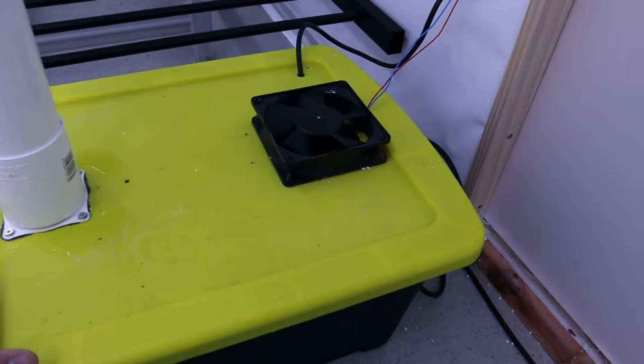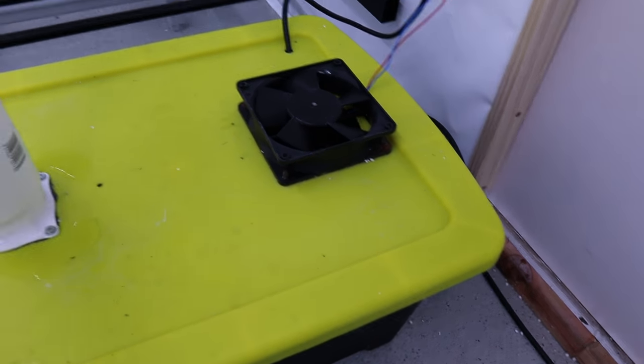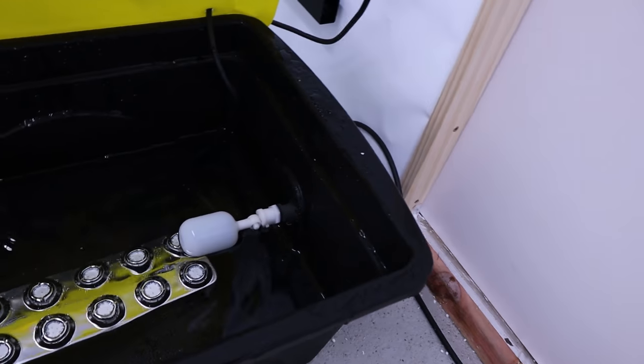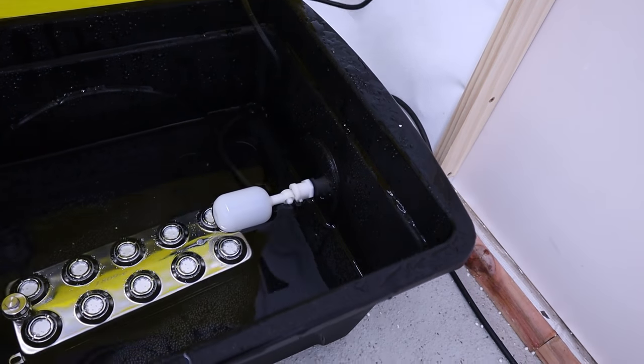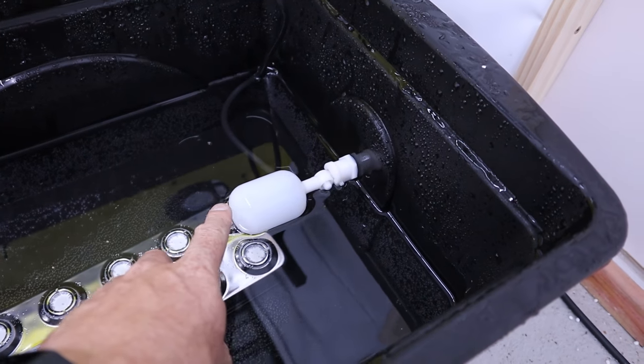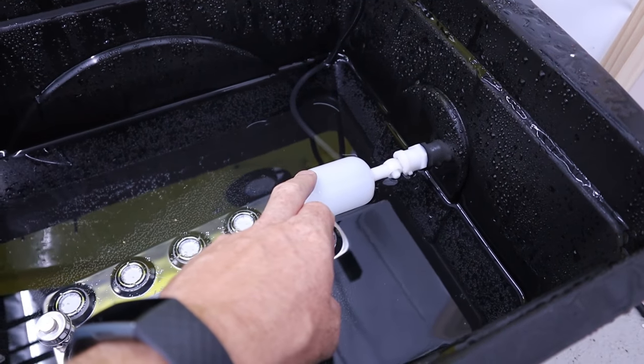And there's one other thing in here which is sort of part of the box build. This is the little float valve here. Now this is just a float valve bought from a local hydroponics store. Obviously really tiny.